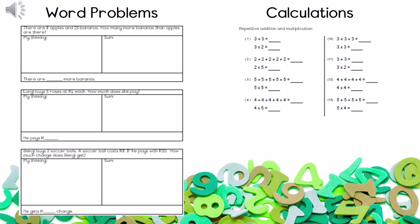Looking at the word problems, the first one tells us there are eight apples and twenty-five bananas. How many more bananas than apples are there? We already know there are more bananas — twenty-five versus eight. I want to know the difference between the two. The easiest way is to draw them like a graph to see how much more bananas there are. The next one says Lungi buys five roses at four rand each — how much does she pay? When you draw this one, draw circles and write four rand in each of them, then write the sum down.